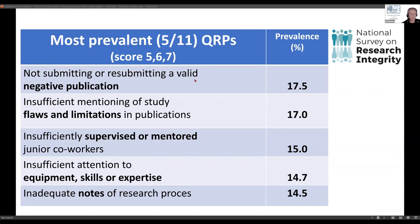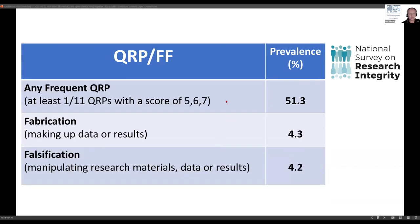Study limitations and flaws not mentioned sufficiently: 70%. Insufficiently supervising and mentoring junior co-workers — whether students, PhD students, or postdocs — 50% self-admitted. Giving insufficient attention to equipment, skills, and expertise: again 50%. Another 50% admitted to inadequate note-taking during their study. When you take all 11 together, more than 50% of respondents declared to engage frequently in at least one of these 11 questionable research practices — this is not rare, it's quite common.